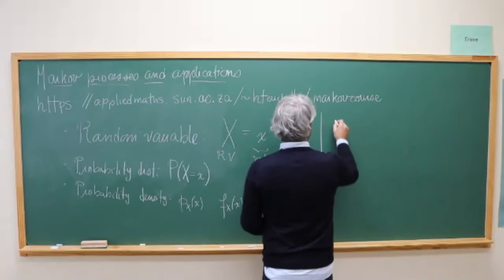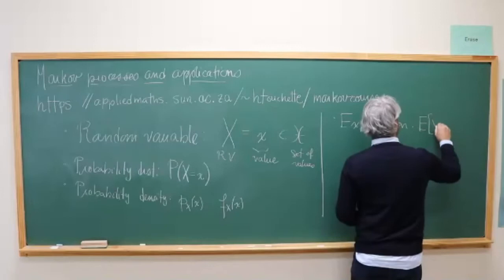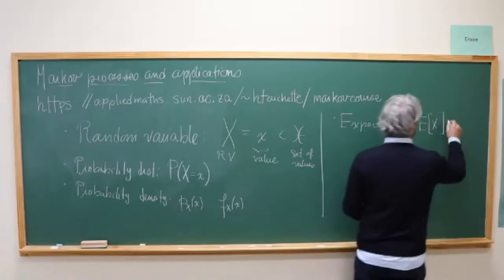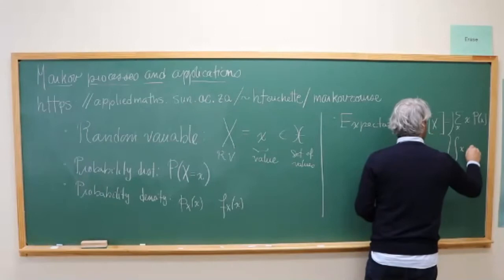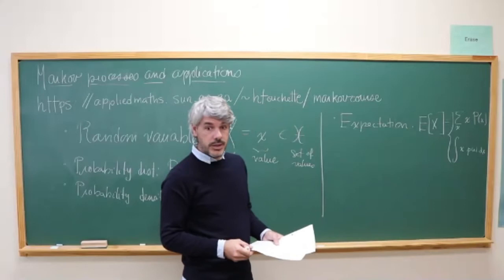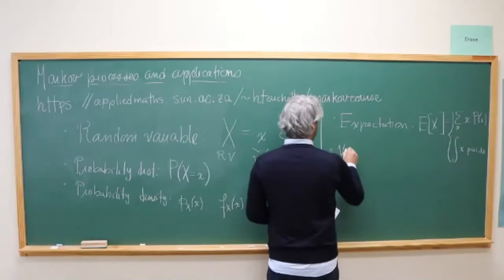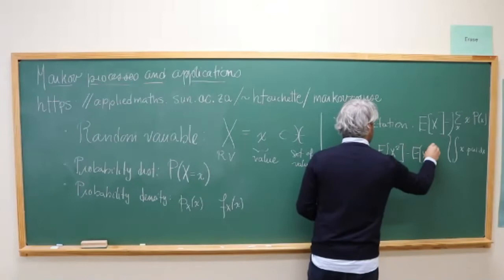The next thing we need is the expectation — also called the mean or expected value. The expected value of a random variable X is the sum over values times their probability, or if dealing with a continuous random variable, it's the value times the density integrated over the set of possible values. You can also take the expectation of any function of the random variable. What we'll often use is the variance of X: the expectation of X squared minus the square of the mean.